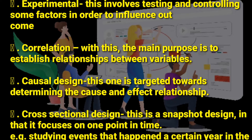Correlation design — the main purpose is to establish a relationship between variables, between the dependent and independent variable. Is it a strong positive relationship, a weak positive relationship, or a negative relationship? The main purpose of correlation is to establish relationships between variables.